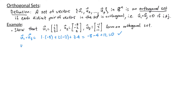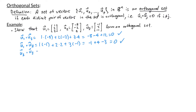Good. Next, u1 dot u3 = (1)(-1) + (2)(2) + (3)(-1) = -1 + 4 - 3 = 0. Lastly, we check u2 dot u3: (-8)(-1) + (-2)(2) + (4)(-1) = 8 - 4 - 4 = 0.